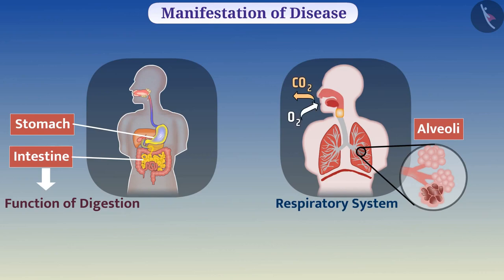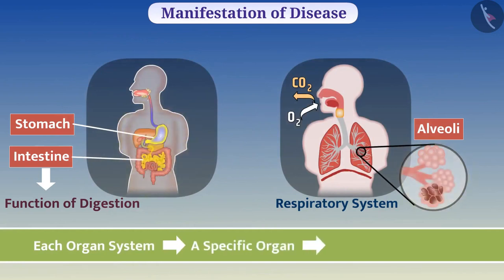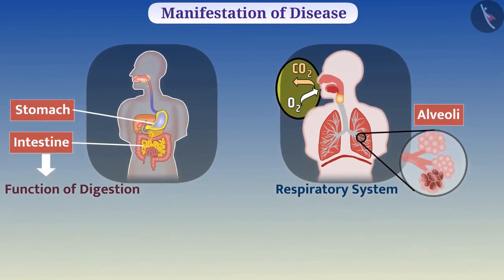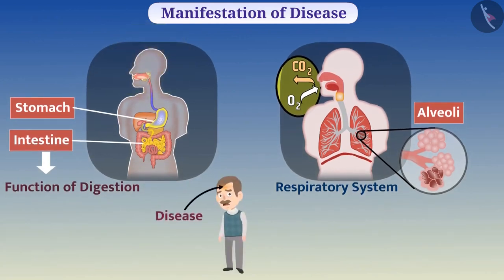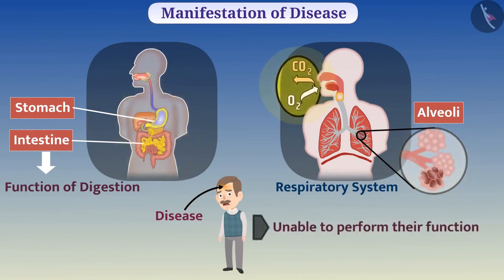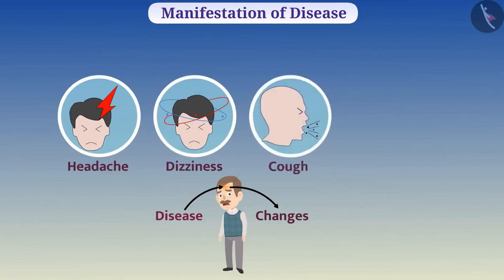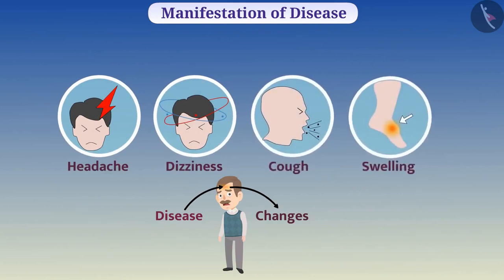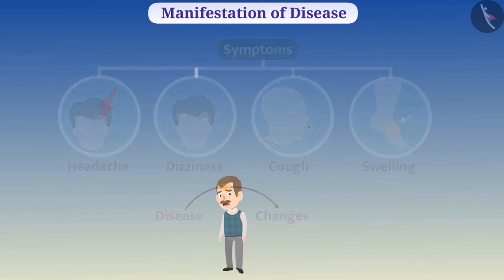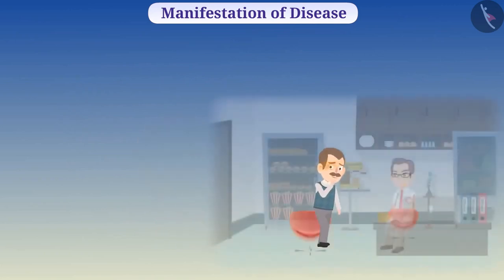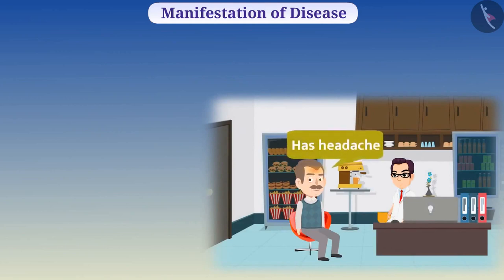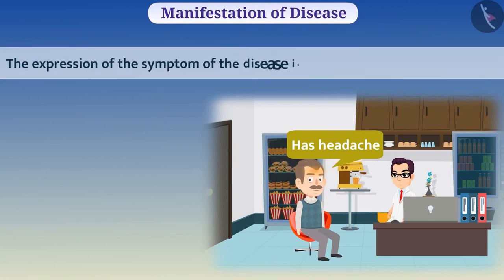In each organ system, a specific organ performs a specific function. But when there is a disease in the body, one or several organ systems are unable to perform their function. Changes are seen in those organs — like headache, dizziness, cough, swelling, and many more. These changes are called symptoms. Only the patient can experience symptoms.